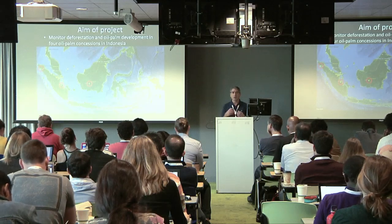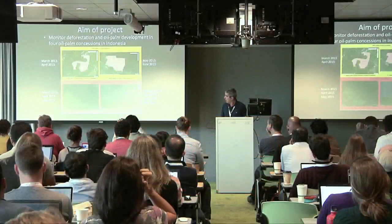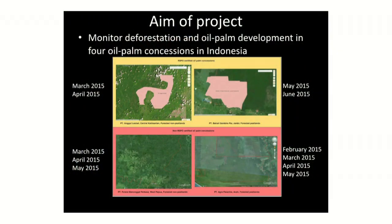We thought that if we can use Skybox images to monitor those plantations on a very regular basis, we might get some indication of what's happening there, and whether they really stick to the guidelines, whether they stick to their concession boundaries, and whether they leave certain forest areas they should, or deforest those as well. We got images from Skybox for four concession areas — the top row are RSPO concession areas in Indonesia, and the bottom row are non-RSPO concessions. These indicate the months we've got imagery for.